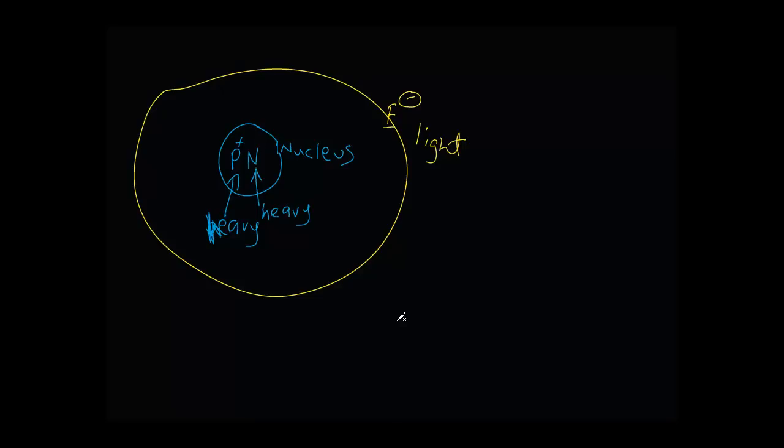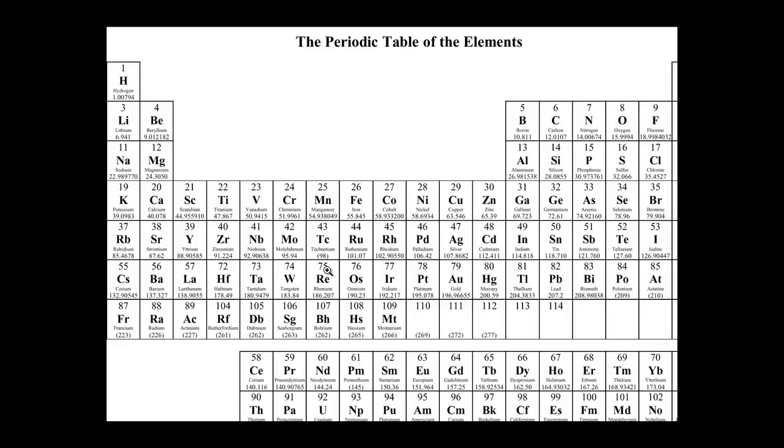Now, all of the elements in the periodic table are made up of this atomic structure. However, they are going to differ in the number of protons, neutrons, and electrons they have.